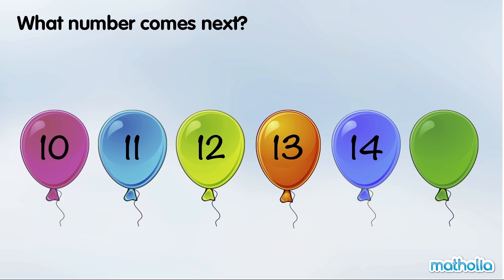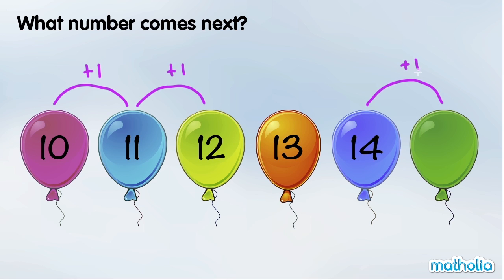What number comes next? 10, add 1, is 11. 11, add 1, is 12. The numbers are going up by 1 each step. 14, add 1, is 15. So the next number is 15.